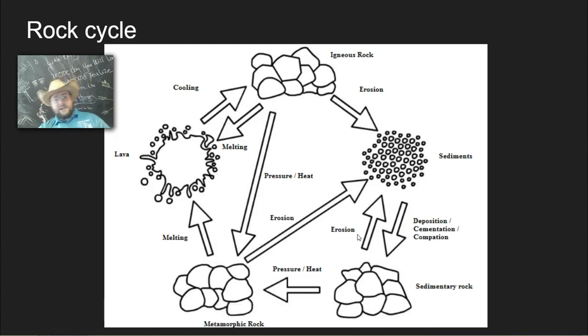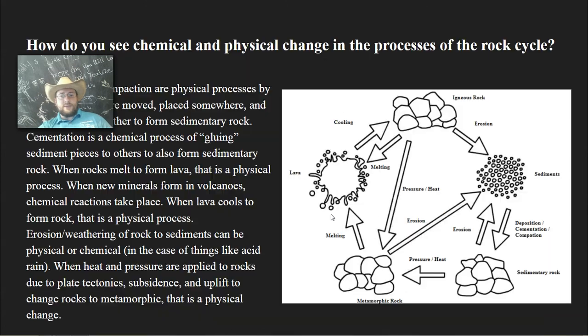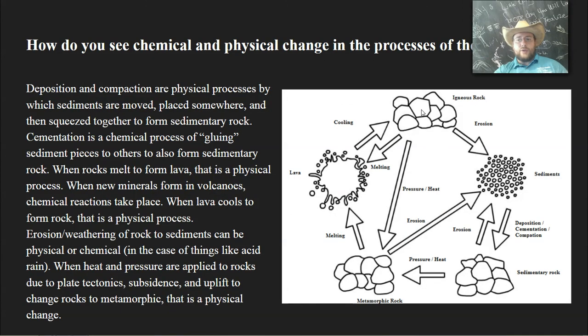How do you see physical and chemical changes in these processes? There are many examples that I discussed. When igneous rocks cool down or melt, those are physical changes. The pressure and heat that causes metamorphic rocks to happen, physical changes. The squeezing of rock and deposition, which is moving of pieces and laying on top of each other, is a physical change. But when rocks get cemented together or eroded by acid rain, that's a chemical change. When erosion happens because of wind or rain abrading against the rock, that's a physical change.